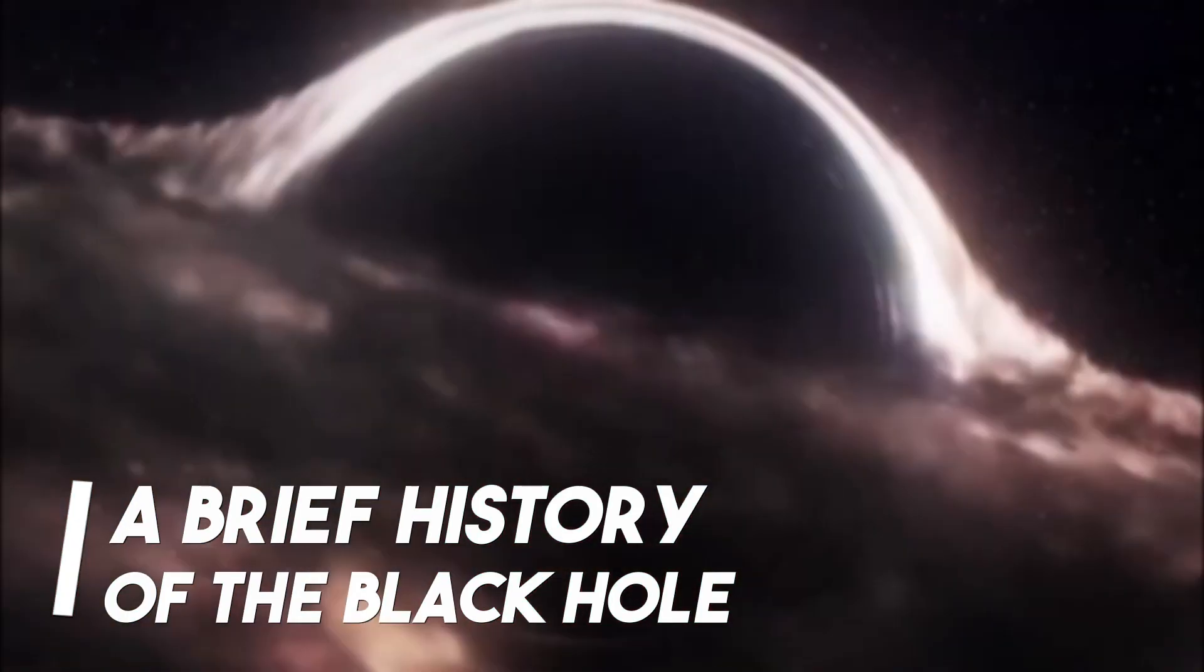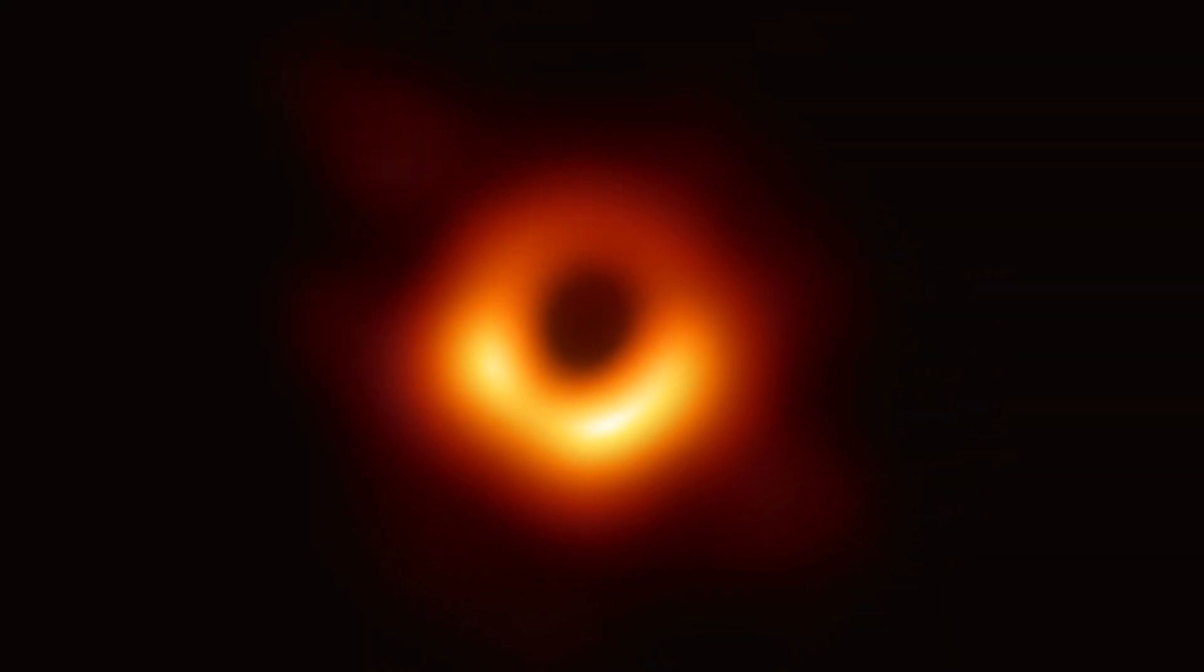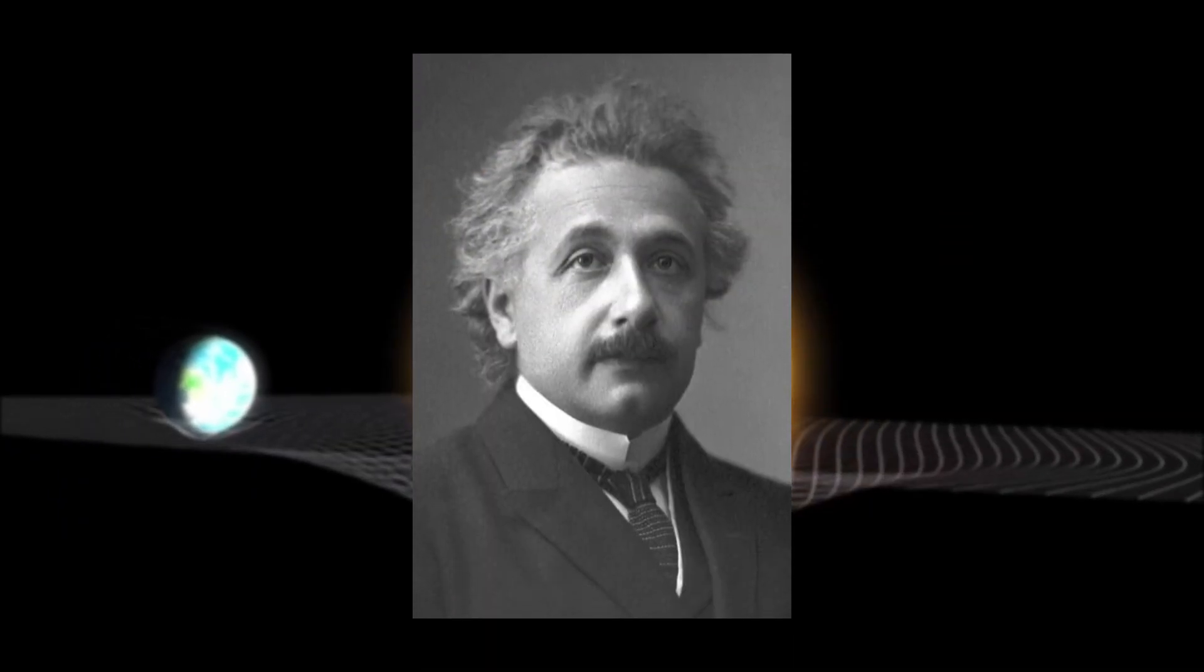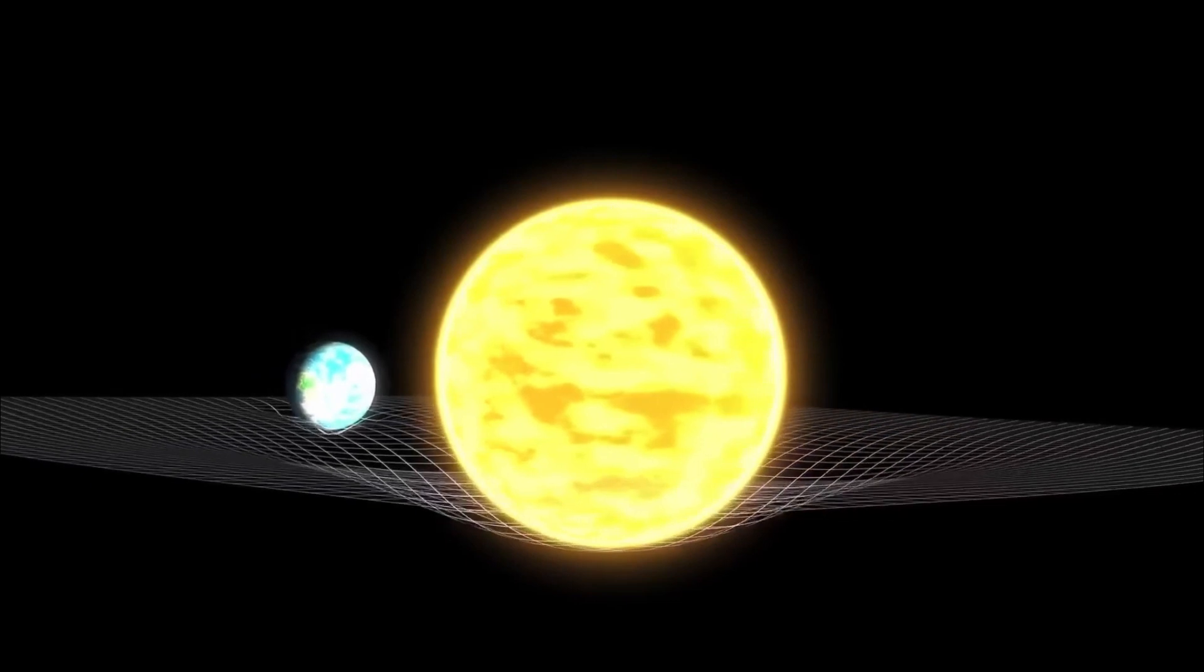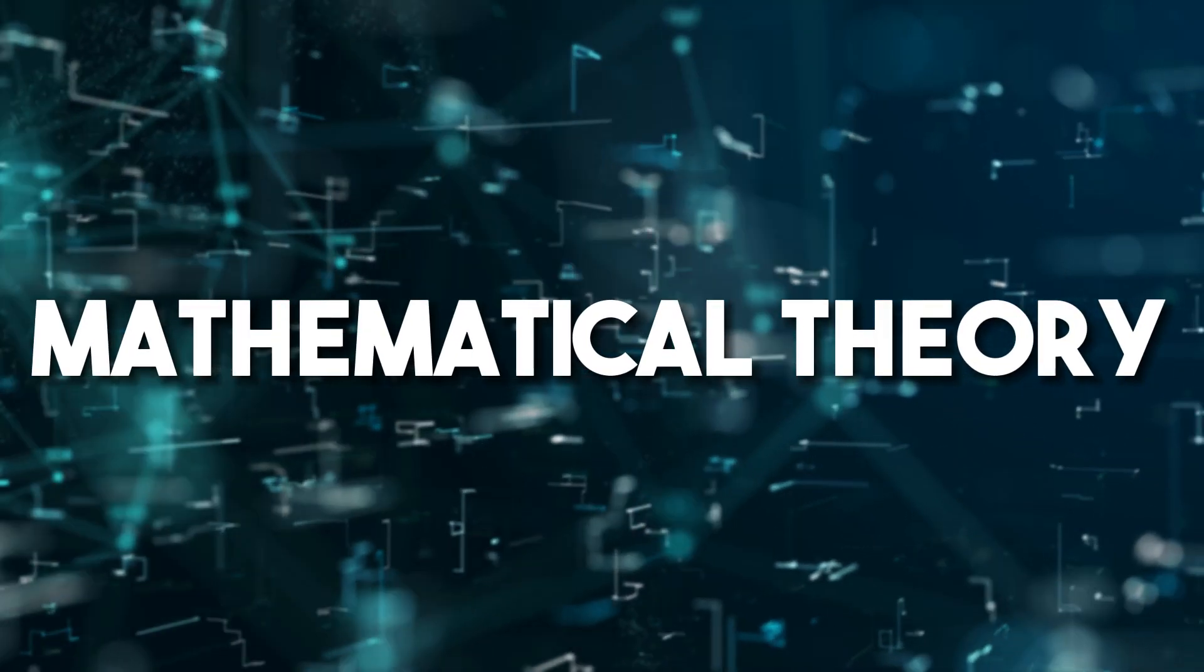A brief history of the black hole. Black holes have been receiving attention since the 1780s. But the primary information about black holes came from Albert Einstein's theory of relativity in 1915. However, the name black hole came in the 1960s. In the past, black holes were once considered a mathematical theory.